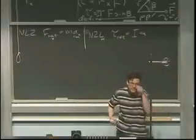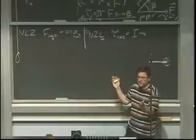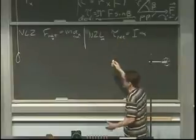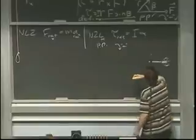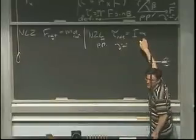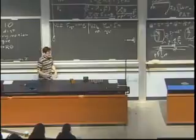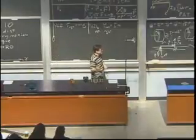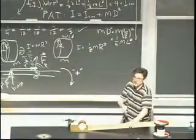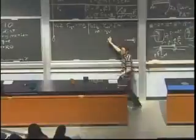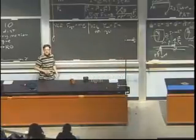We have to define our pivot point and our direction for positive rotations, and apply these notions consistently throughout. If I want the angular acceleration alpha that an object experiences, I calculate the net torque divided by the moment of inertia. In the next class I'll solve a general problem and also get into rotational kinetic energy.